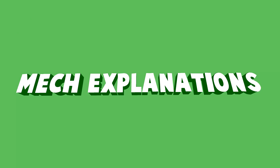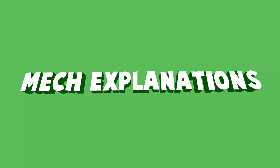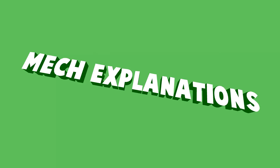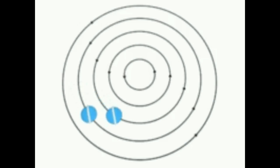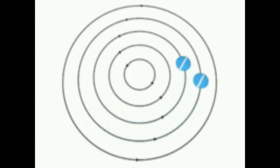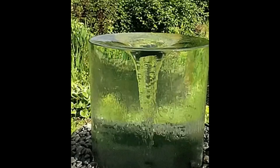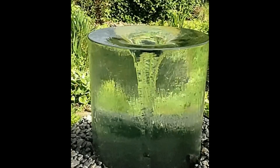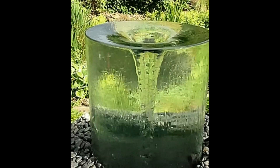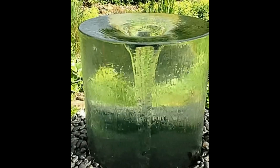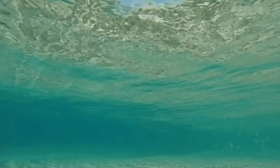Greetings to one and all watching this video — this is Mech Explanations. Now let us learn about Vortex and Fluid Dynamics. A vortex (plural: vortices or vortexes) is a region in a fluid in which the flow revolves around an axis line, which may be straight or curved.